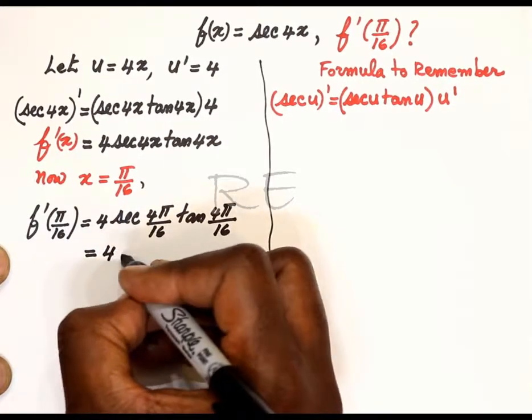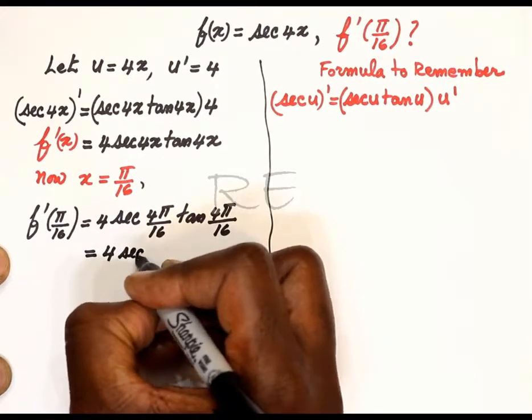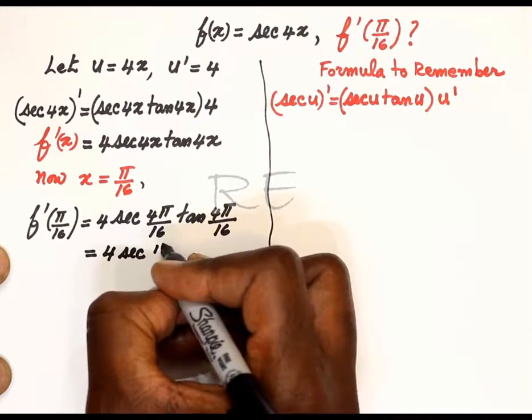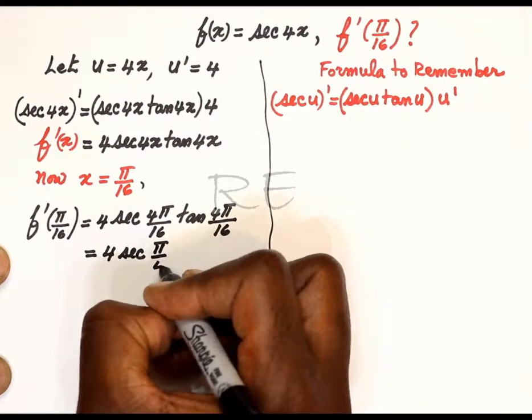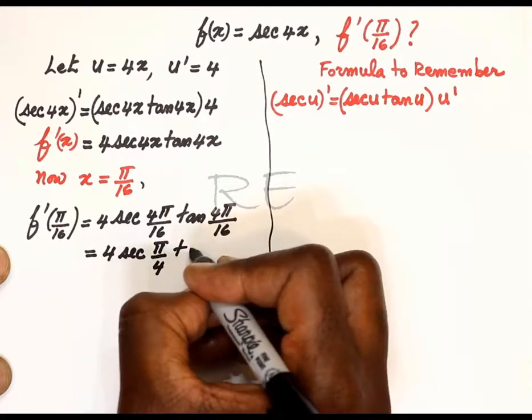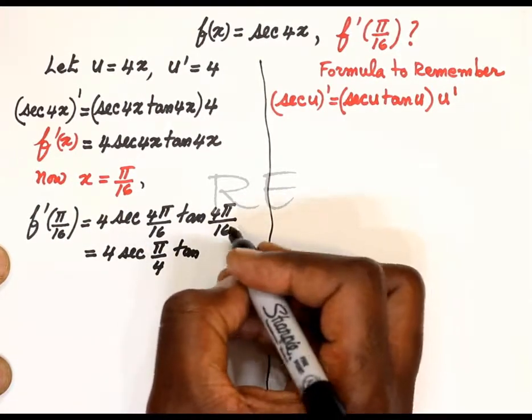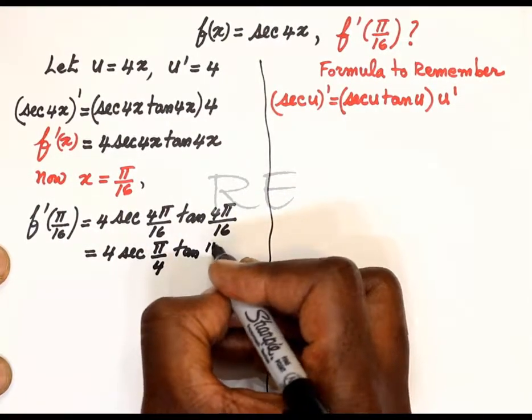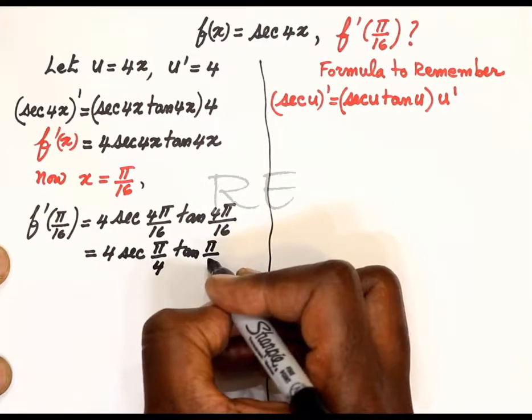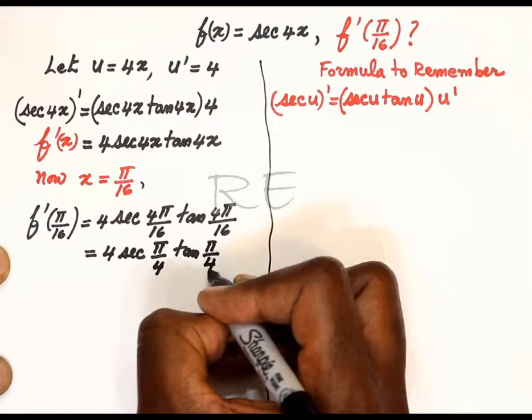We're going to simplify the fraction, so it's going to be 4 secant pi over 4 tan pi over 4. We're dividing numerator and denominator by 4.